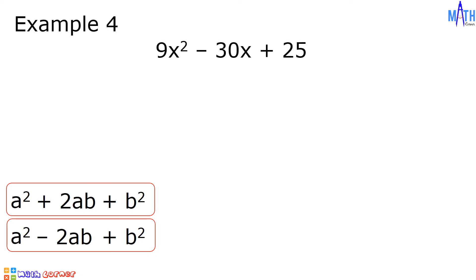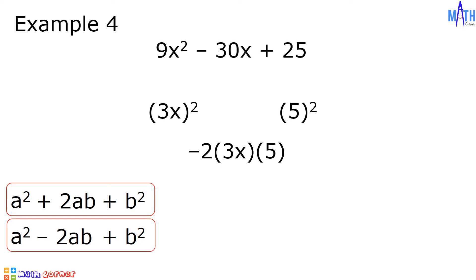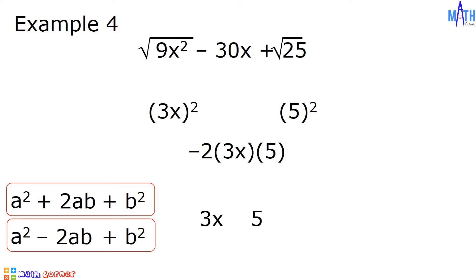Last example: let us factor 9x squared minus 30x plus 25. It must be of the form a squared minus 2ab plus b squared. Since 9x squared can be written as the square of 3x, and 25 can be written as the square of 5, then a equals 3x and b equals 5. Since negative 2ab, or negative 2 times 3x times 5, is equal to negative 30x, then 9x squared minus 30x plus 25 is a perfect square trinomial. The square root of 9x squared is 3x and the square root of 25 is 5, so we have the square of 3x minus 5.